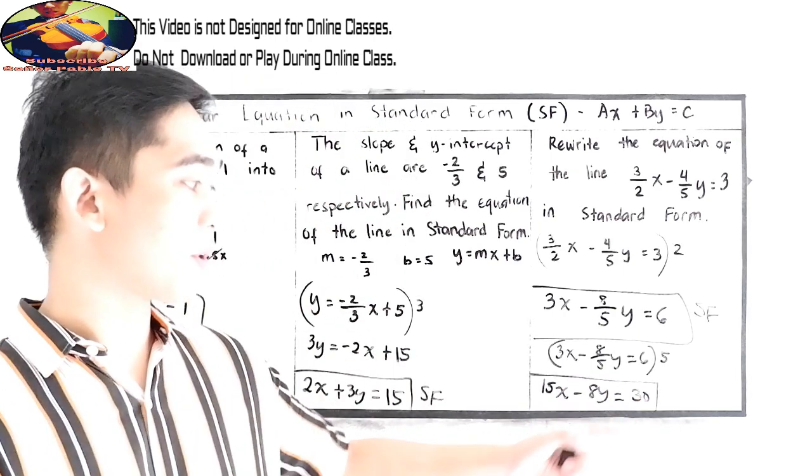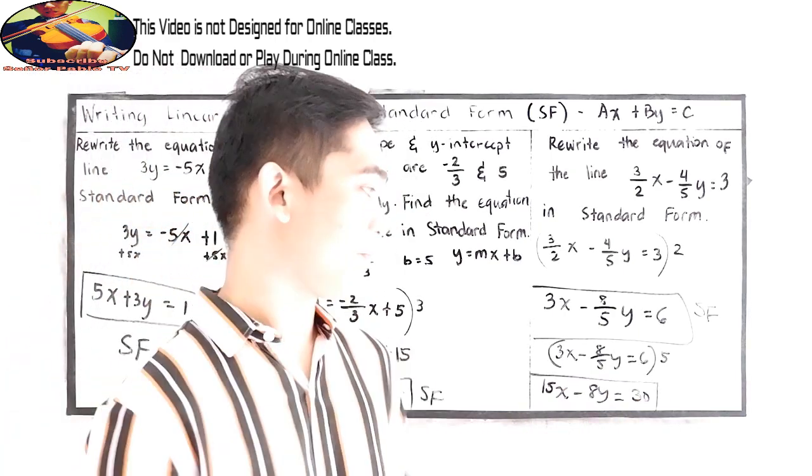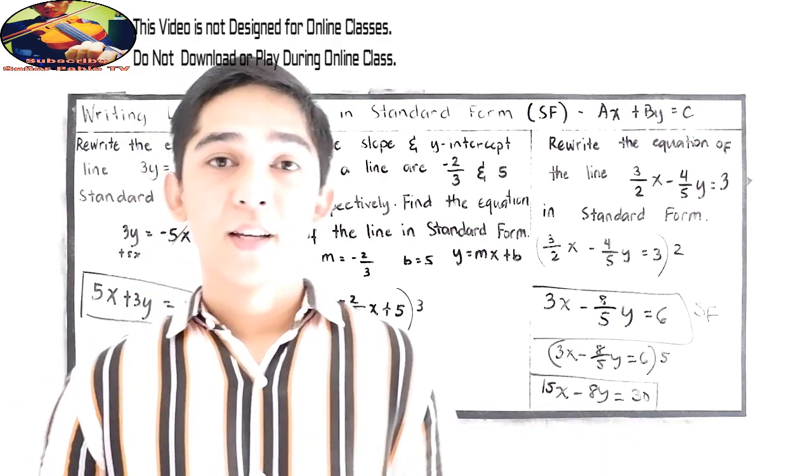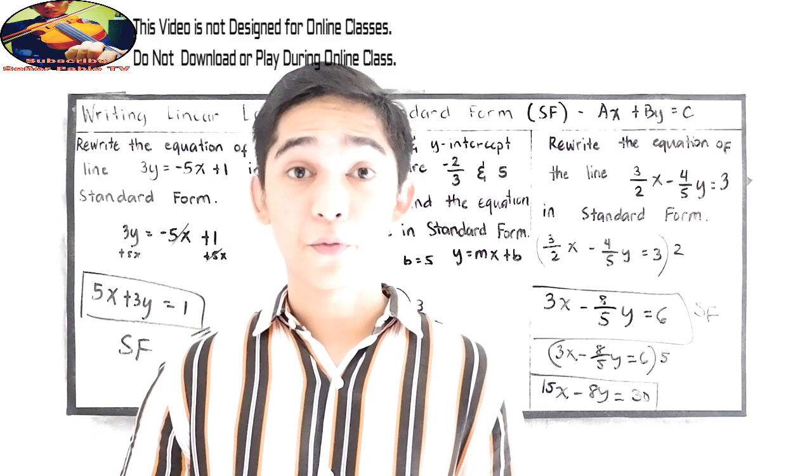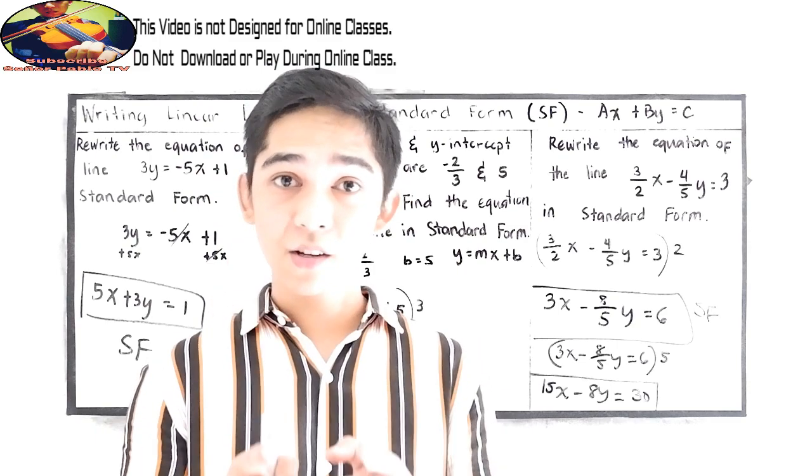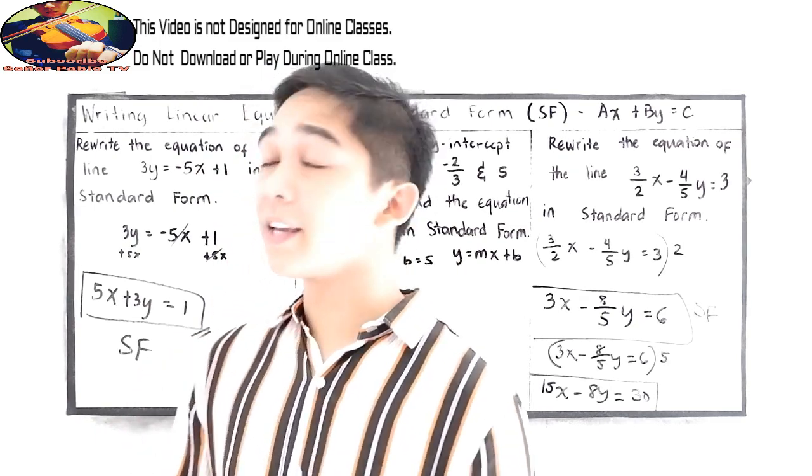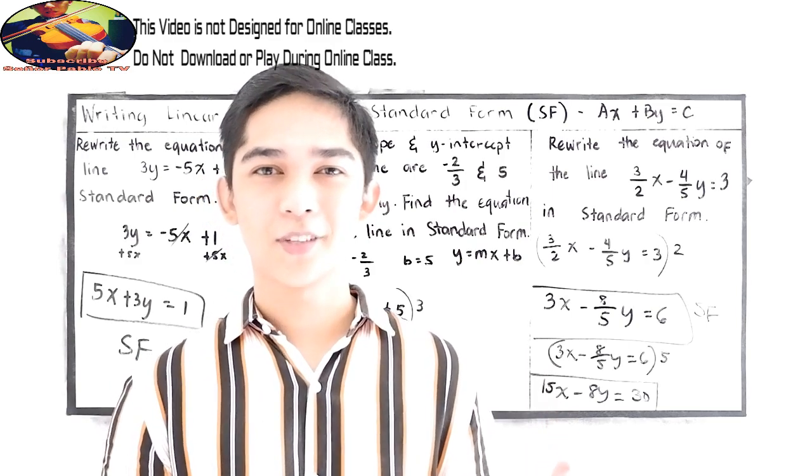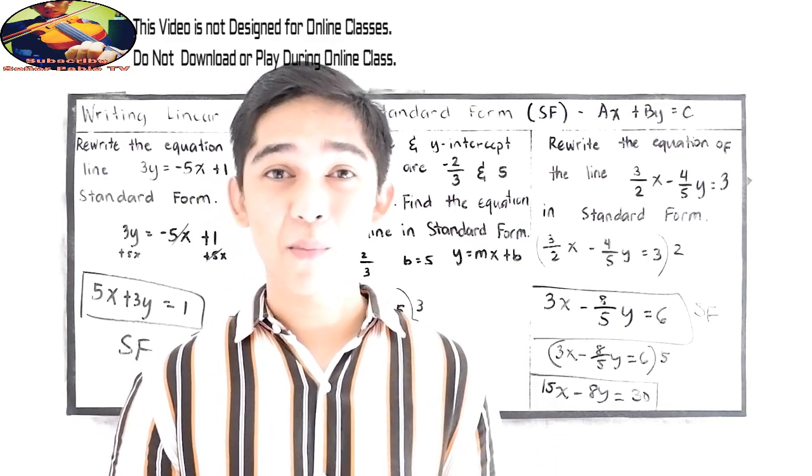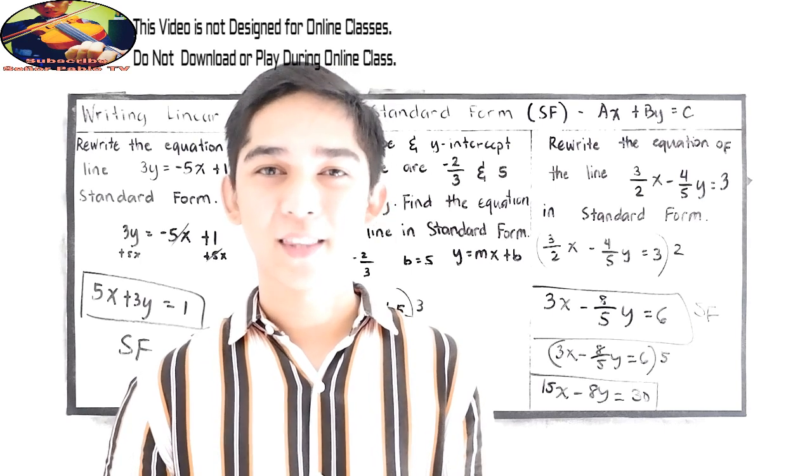This gives us whole numbers for A, B, and C: 15x - 8y = 30. That is how to rewrite linear equations into standard form. Your next lesson will be writing linear equations into slope-intercept form. Thank you for watching Senior Pablo TV, and see you in our next lesson.